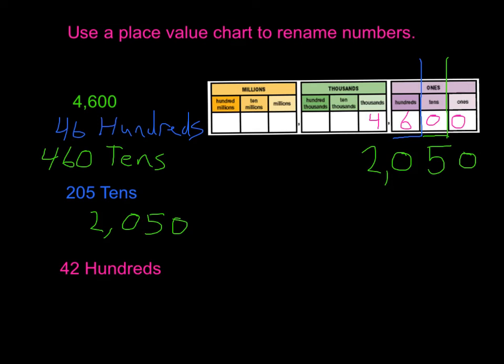On this last one, we have 42 hundreds. Because we have 42 hundreds, our 2 needs to go in our hundreds place. So we're going to put our 2 in our hundreds place. Then we're going to put our 4 in our thousands place, and fill in our zeros. And in standard form, 42 hundreds is then 4,200. And that is how we use the place value chart to help us rename numbers.